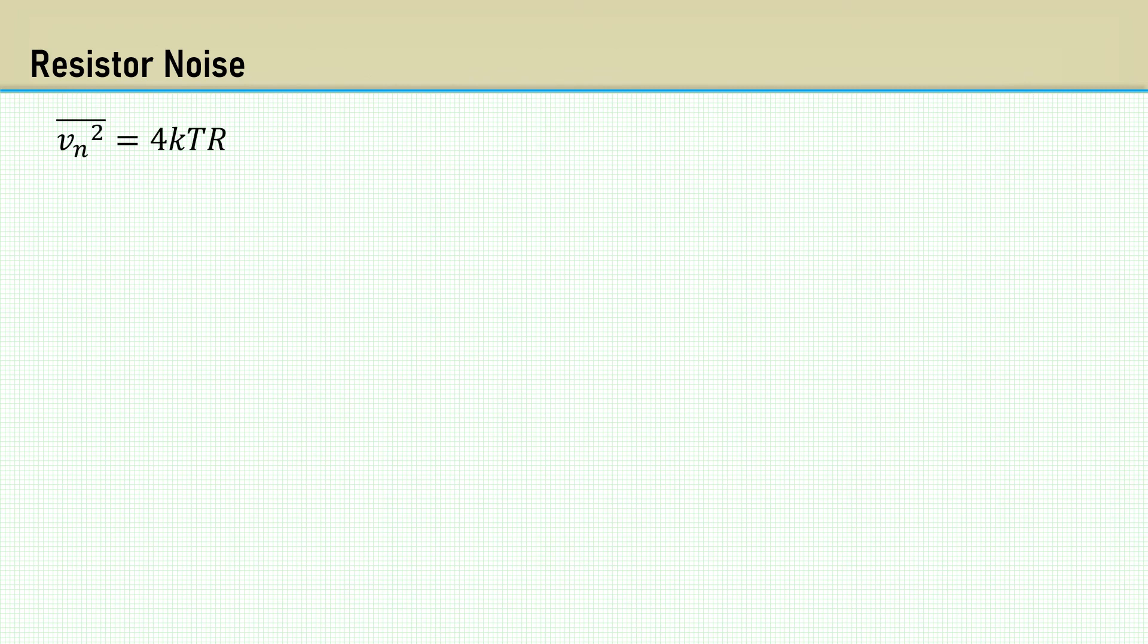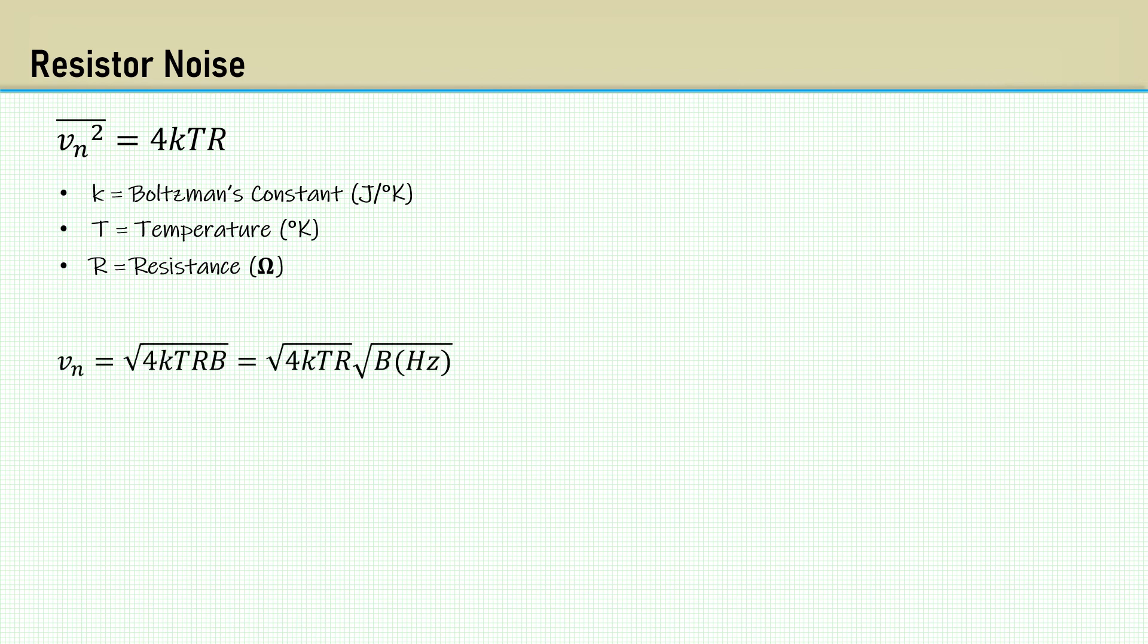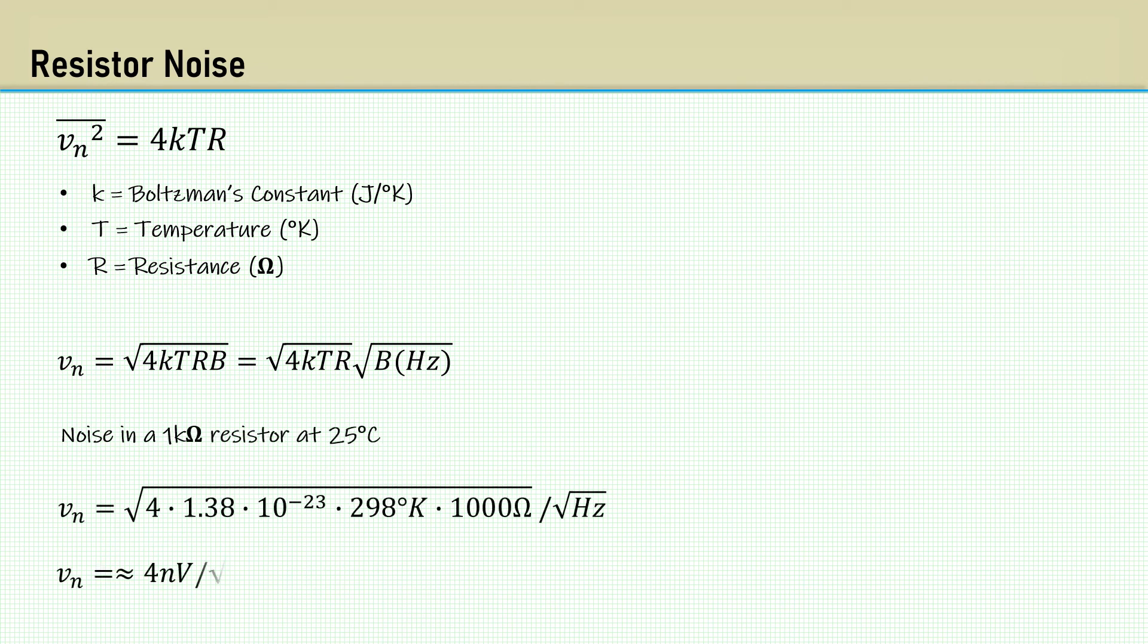Another reason to not use the canceling resistor is noise. That input resistor generates significant noise. Here's the one-sided DC power spectral density of resistor noise per hertz of bandwidth. K is Boltzmann's constant. T is the temperature. R is the resistance. Here's the equation for the noise voltage. As an example, let's calculate the noise in a 1K resistor. It comes out close to 4 nanovolts per square root hertz.